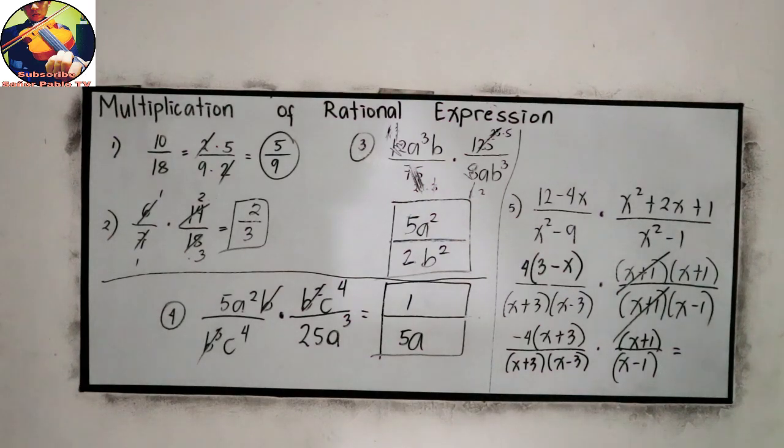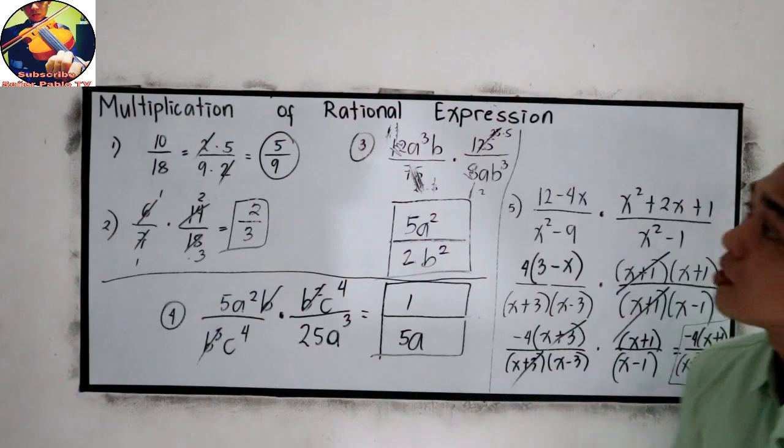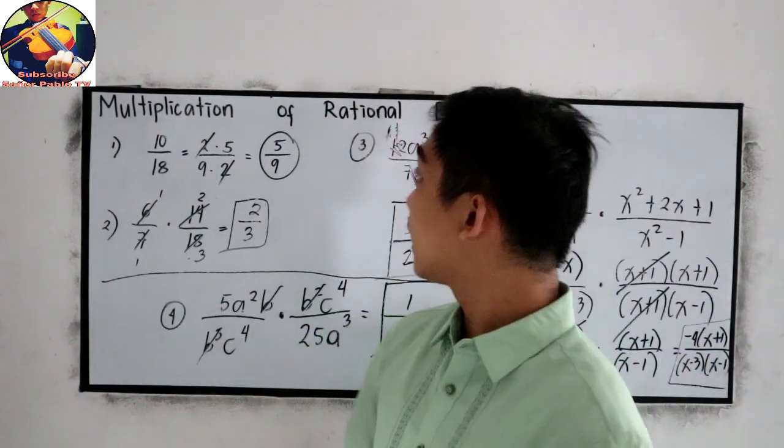Cancel similar terms: x plus 3 and x plus 3. And for our final answer, negative 4, x plus 1 over x minus 3, x minus 1. This is now our final answer. But if you want to distribute or use the FOIL method, that is okay. But if you want to write your final answer in this form, it is also okay. So that is the multiplication of rational expression.